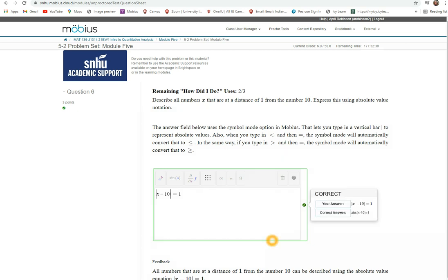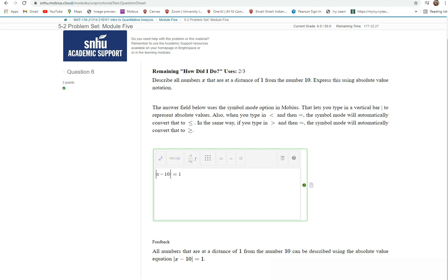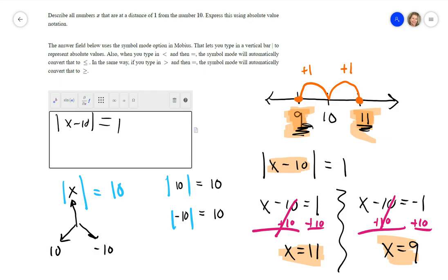There you go. All numbers that are a distance of 1 from the number 10 can be described using the absolute value equation. Okay, so I did it correctly. I hope that explained that for you.